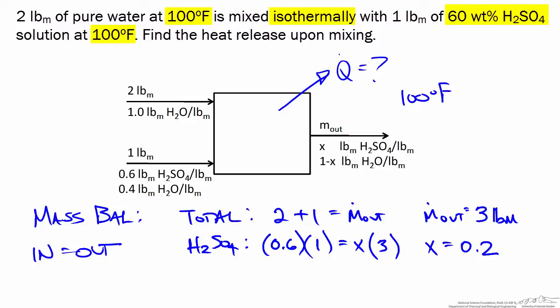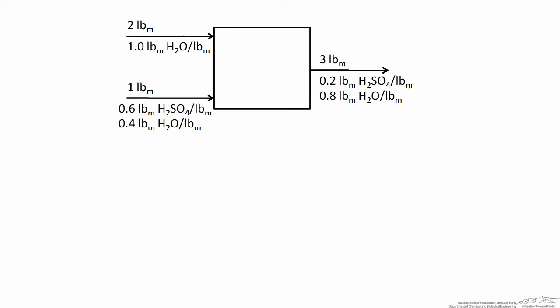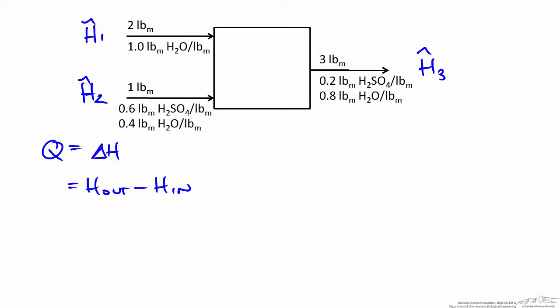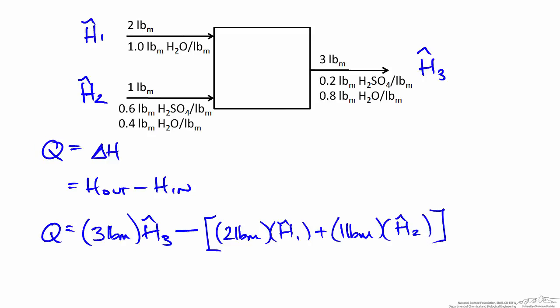Using these values, we set up an energy balance to calculate the heat released upon mixing. The energy balance is Q equals delta H, the change in enthalpy, which we can rewrite as outlet enthalpy minus inlet enthalpy. The total enthalpy of each stream is related to the amount of material and its specific enthalpy on a per unit mass basis. So Q equals 3 pounds times H3, minus 2 pounds times H1, minus 1 pound times H2.